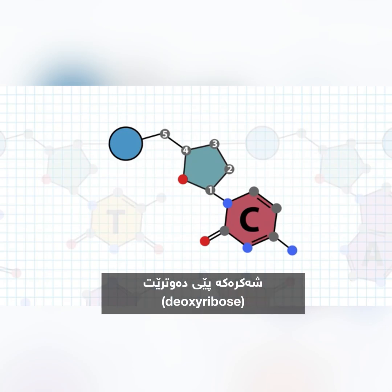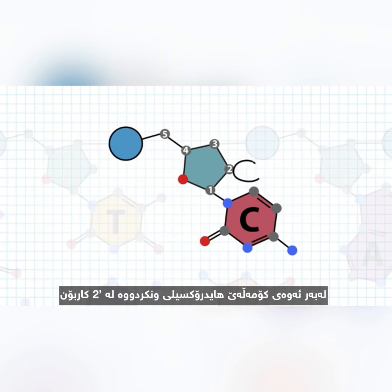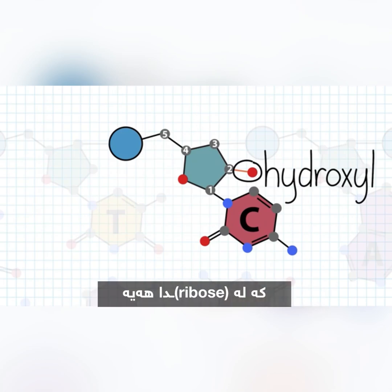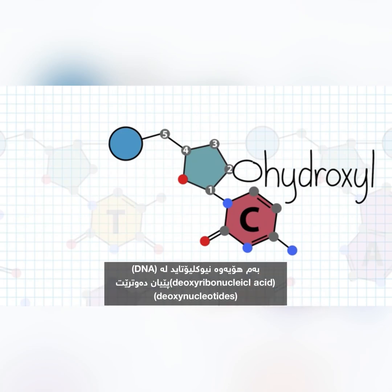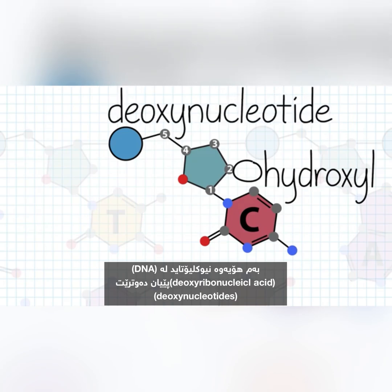The sugar is called deoxyribose because it is missing a hydroxyl group at the 2' carbon, which is present in ribose. Because of this, nucleotides in DNA, deoxyribonucleic acid, are called deoxynucleotides.